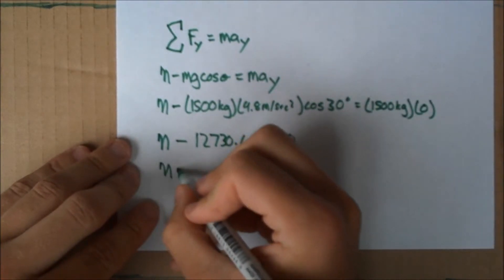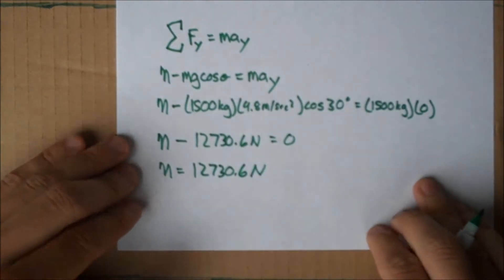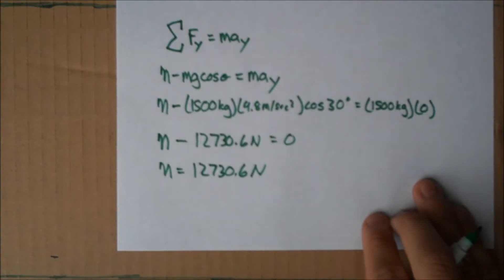If we simplify this, we get normal force minus 12,730.6 newtons equals zero. So we get normal force is equal to 12,730.6 newtons. We have solved part A, which is the normal force.